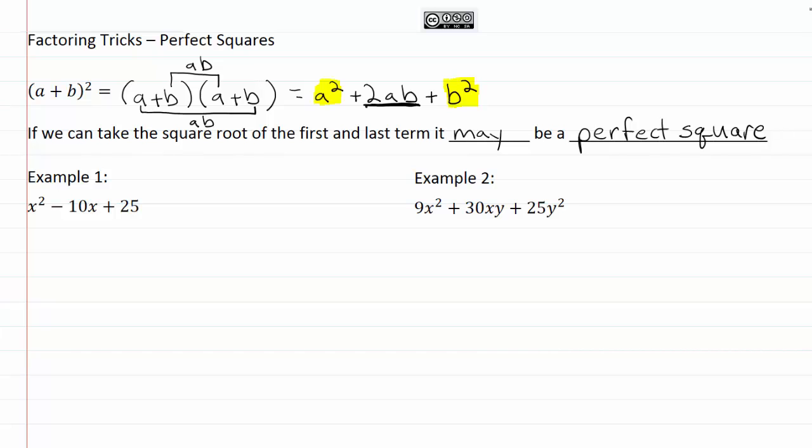Okay, so our first example here we've got x² - 10x + 25. So we can notice right here that we've got an x² at the beginning and a 25 at the end. Both of these are perfect square numbers. So we could say that, you know, could possibly be an (x + 5)². Because then we'd have the 5² would give us 25 and the x² would give us x².